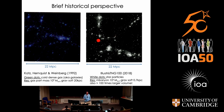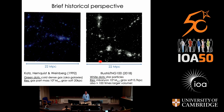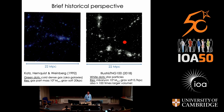Compare that to what we have now: I cut out a volume from the IllustrisTNG-100 simulation of the same size. The resolution is a thousand times better in mass, with gravitational softening of the order of a kiloparsec, meaning these galaxies are now resolved. And I should note we also have a hundred times more volume in IllustrisTNG than in those early simulations. So we've come a very long way.